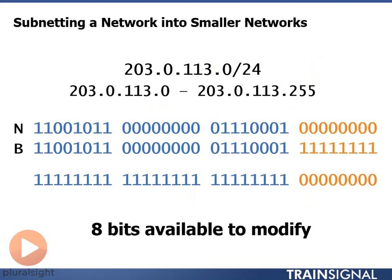The first thing we want to do is examine the range of addresses that our internet service provider gave us. That range goes from the network address 203.0.113.0 all the way up to the broadcast address 203.0.113.255. If I convert that to binary, you see here the network address on top with the first 24 bits in the network portion and all zeros in the host portion. For the broadcast address, we have the same network portion but all ones in the host portion. This tells me I have eight bits of the address to do anything I want with, so I can modify those eight bits to create eight more networks.